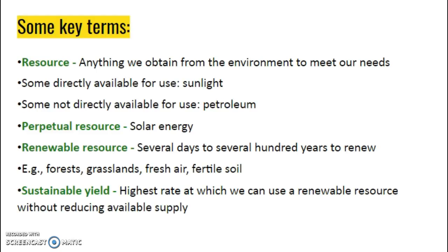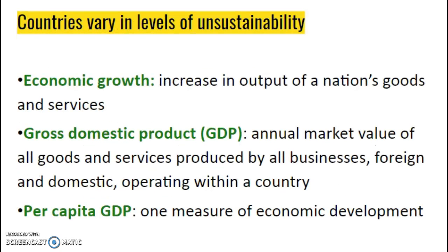Perpetual resources are things that are always available, namely solar energy. A renewable resource is going to take several days to a few hundred years to renew — you can see some examples listed there. And then sustainable yield is the highest rate at which we can use a renewable resource without damaging the supply for the next generation. Again, that's just vocab, but it's key words we'll use throughout the whole year.